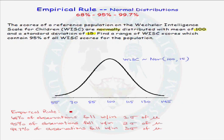The empirical rule tells us that 68% of observations fall within one standard deviation of the mean mu. Ninety-five percent of observations fall within two standard deviations of mu. Ninety-nine point seven percent of observations fall within three standard deviations of mu.